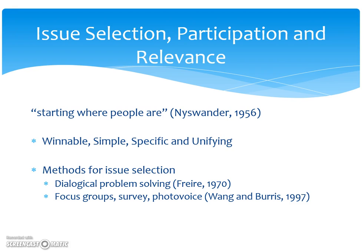Issue selection, participation, and relevance — you have to start where the people are. The issue has to be winnable, simple, specific, and something that is unifying. For example, everyone in the community can unify on the fact that teen pregnancy is an issue, even if they don't unify on specific methods. Methods for issue selection include dialogal problem solving — problem solving through conversations, separating issues into themes — as well as focus groups, surveys, and what we call photo voice.